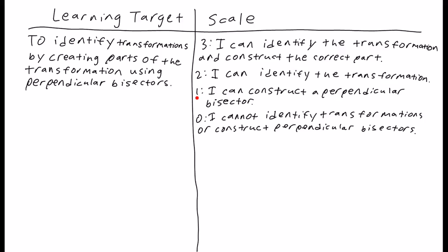One, you can construct a perpendicular bisector, but that doesn't necessarily mean you have any idea about transformations. And zero, you can't identify transformations or construct perpendicular bisectors. You can't do either of those things.